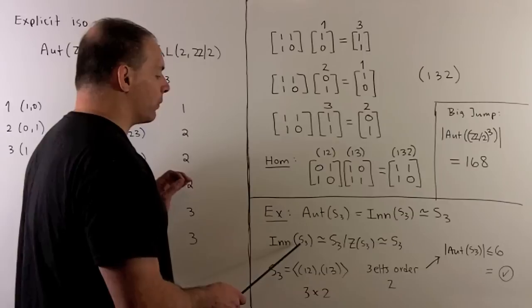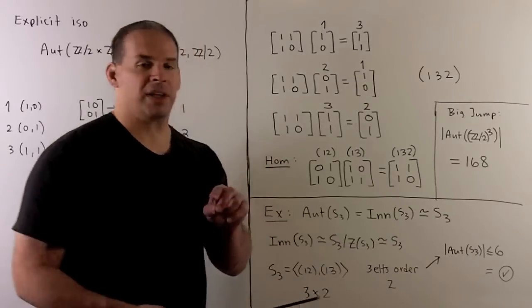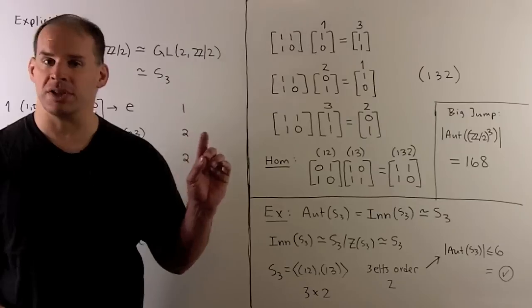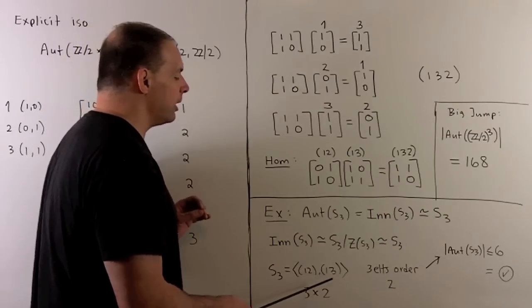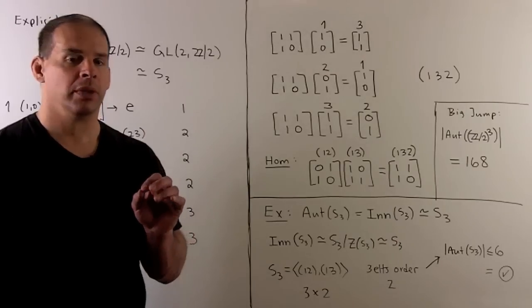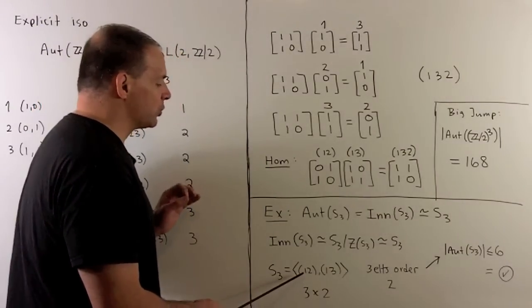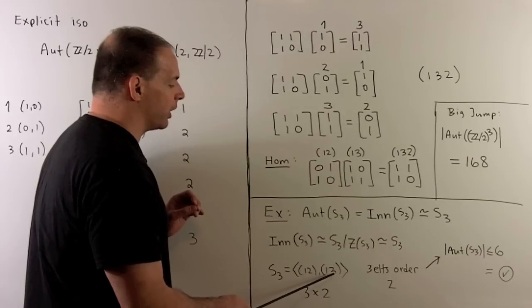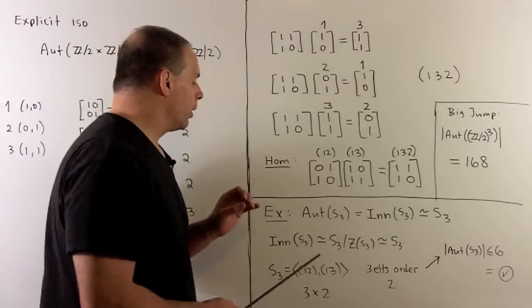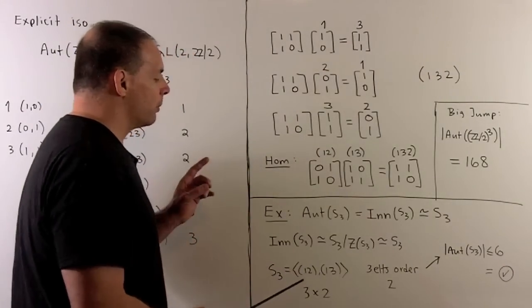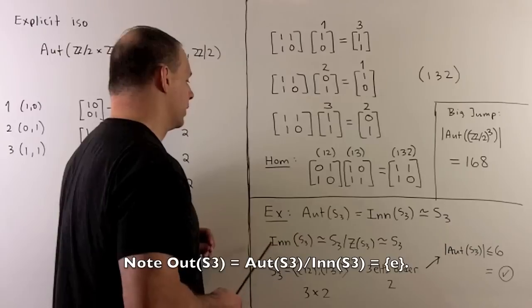For the inner automorphisms, this is S3 modulo the center of S3. The center of S3 is just the identity element, so Inn(S3) ≅ S3. Now S3 is generated by (1,2) and (1,3), and has three elements of order 2. Considering all bijections sending elements of order 2 to elements of order 2: three places for (1,2), then two remaining for (1,3), giving at most six automorphisms. We already have six inner automorphisms, so that's an equality — exactly six elements in Aut(S3), confirming Aut(S3) ≅ S3.